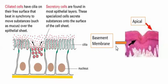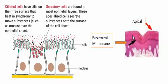Thinking about the basement membrane, let's look at that for a second. Look how it is situated — it's very complicated in its makeup. But a major point we want to remember here is that the epithelial cells lie on what's called the reticular lamina.